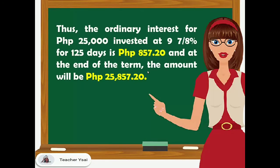Thus, the ordinary interest for 25,000 pesos invested at 9 and 7/8 percent for 125 days is 857 pesos and 20 centavos. And at the end of the term, the amount will be 25,857 pesos and 20 centavos.